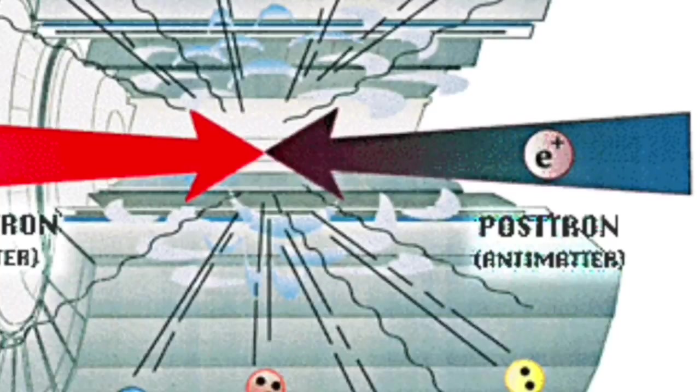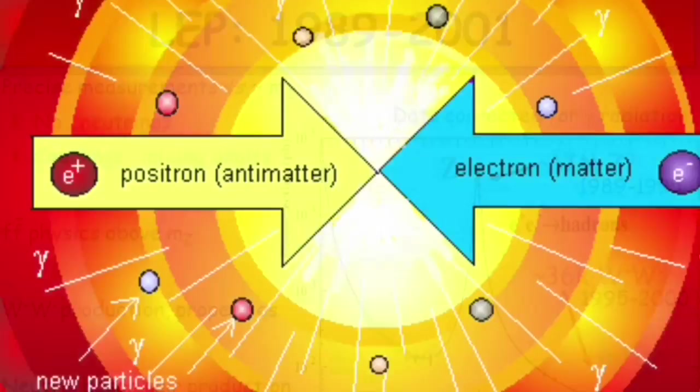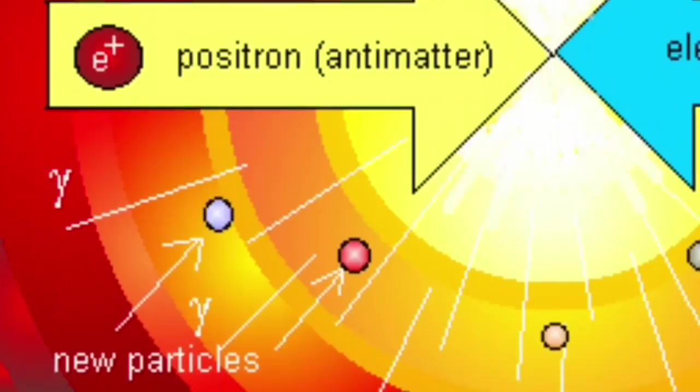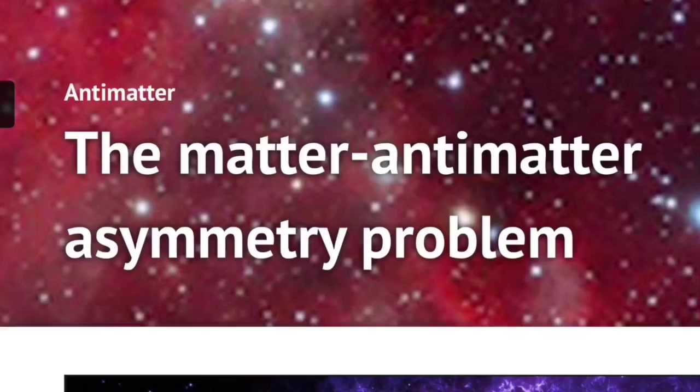Positrons are antimatter particles of electrons. The LEP was their 1980s through the 90s particle collider, colliding hundreds of billions of particles — mostly antimatter particles — every day. They were creating new particles of antimatter, and matter, but mostly antimatter.